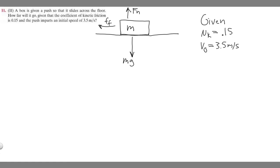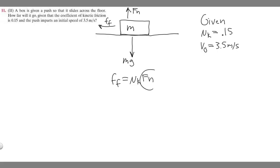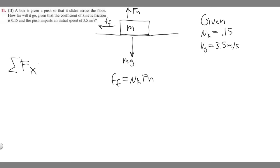Now that we've got this drawn, what we want to do is solve this formula: the force of friction is equal to mu sub k times F sub n. So essentially what we're going to do is plug in mu sub k, plug in something for F sub n, and plug in something for the force of friction.